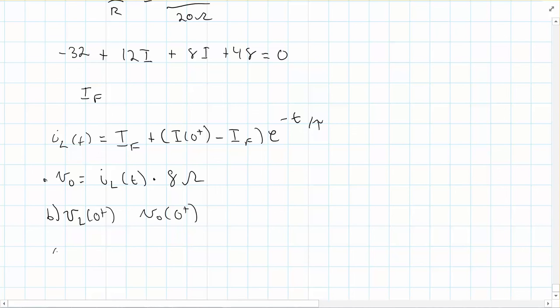But for VL at 0 plus, you would have to first remember that VL is equal to L times the derivative of the current and then plug 0 in.